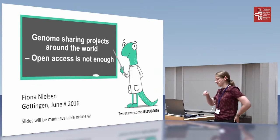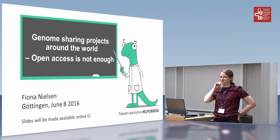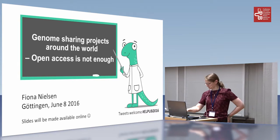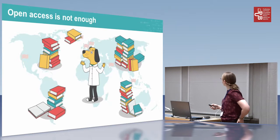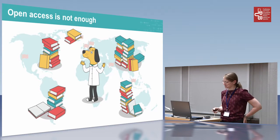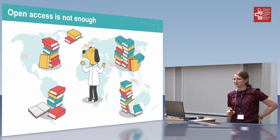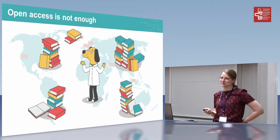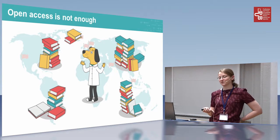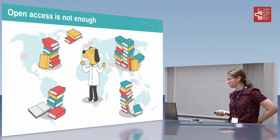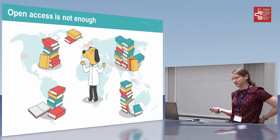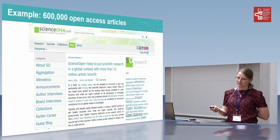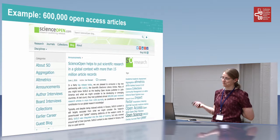I want to tell you something about how open access is not the same as accessibility. There's lots of data, and in this context I'm talking about data publishing, but data being available is not the same as it being accessible for research use. I want to preamble my presentation with an example that came up just last week — not in terms of data publishing, but in terms of paper publishing.